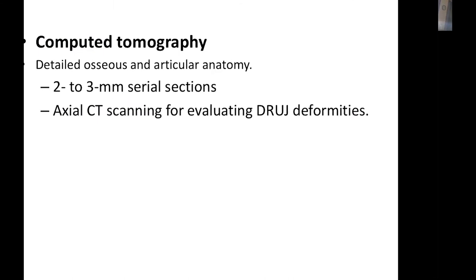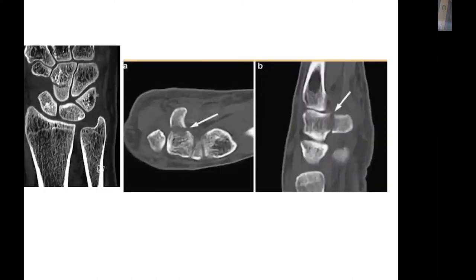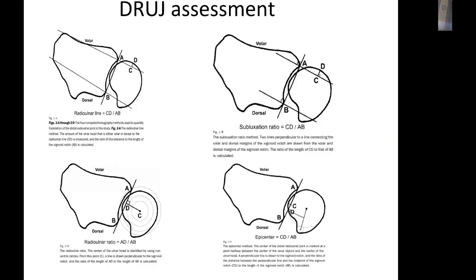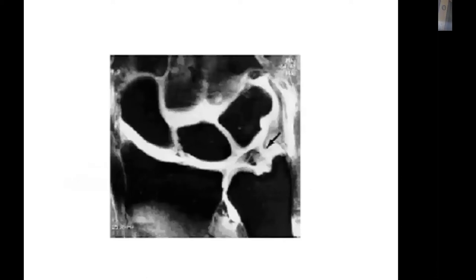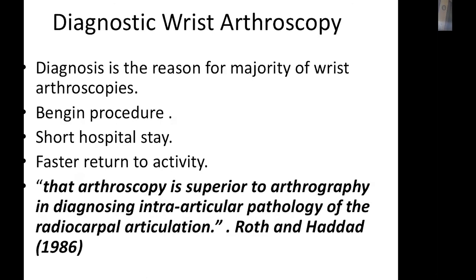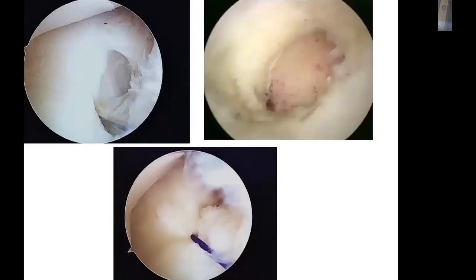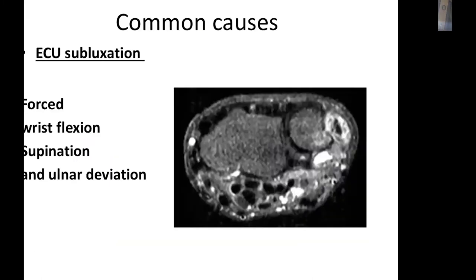CT is important when you suspect osseous pathology such as cysts or minor fractures, and it provides information about DRUJ subluxation. MRI is essential for soft tissue pathology or AVN. Diagnostic arthroscopy is now the investigation of choice for detecting long-standing ulnar-side rest pain, as it can detect intra-articular pathology and TFCC tears.